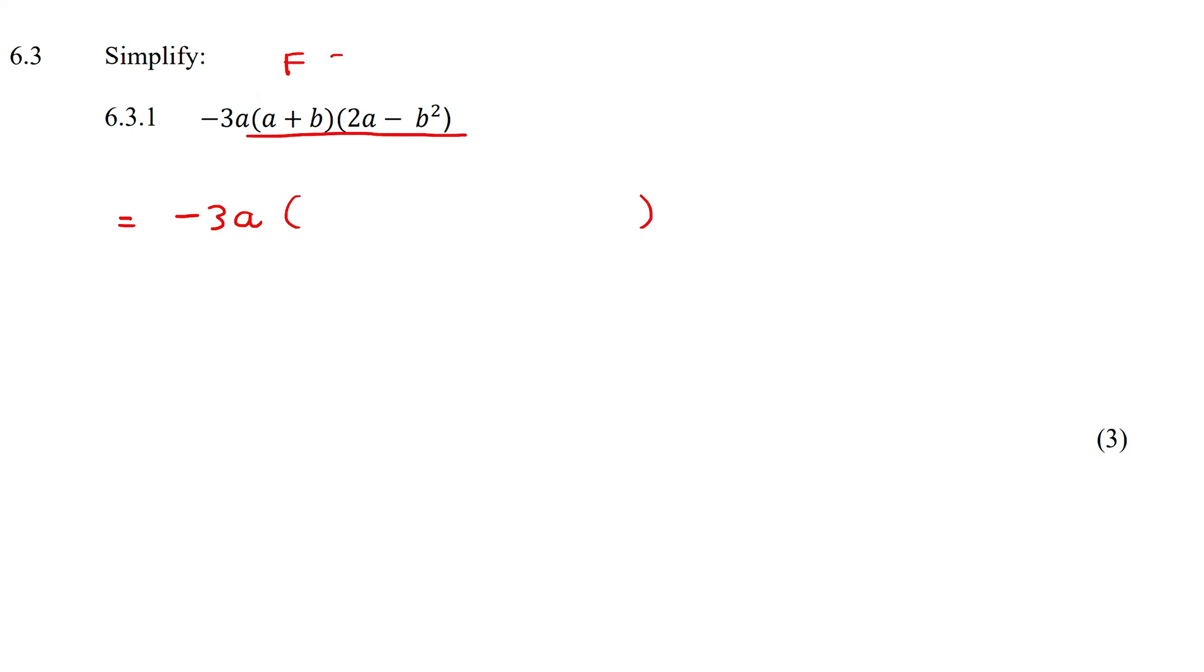Now you can do that however you want, but one of the more popular methods is FOIL, where the F stands for the first one in this bracket and the first one in that bracket. So if you multiply those, you get 2a².